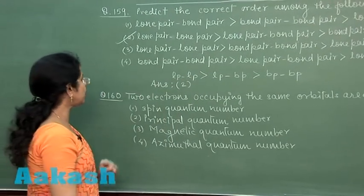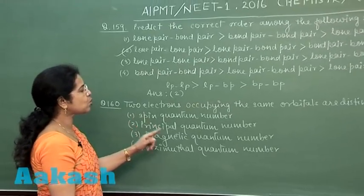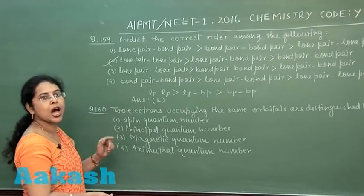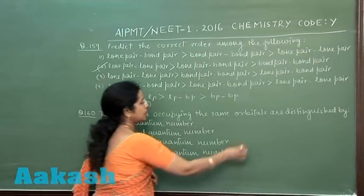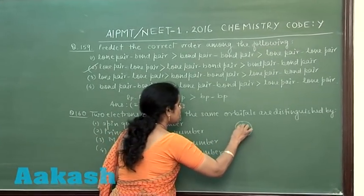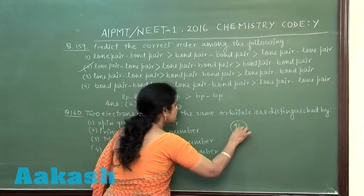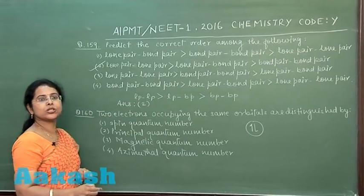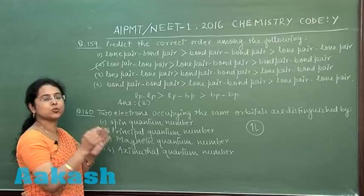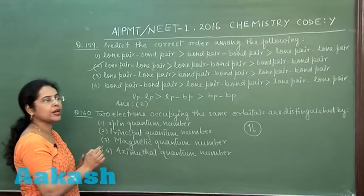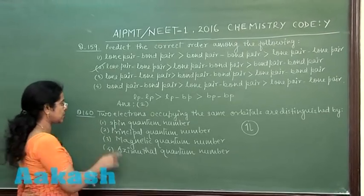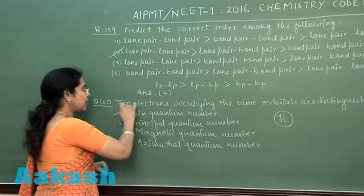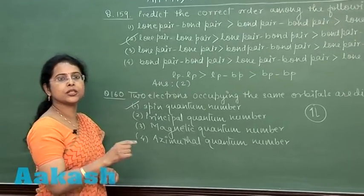The next question asks: two electrons occupying the same orbital are distinguished by which means? Two electrons are present in the same orbital, and the question is by which quantum number they can be distinguished. The answer is spin quantum number.